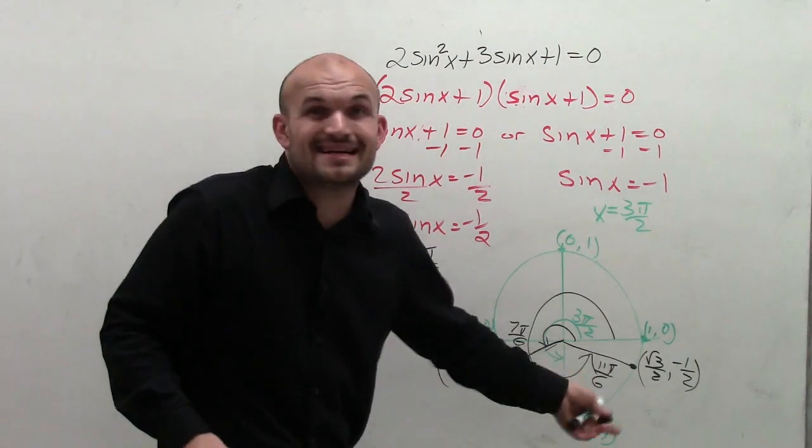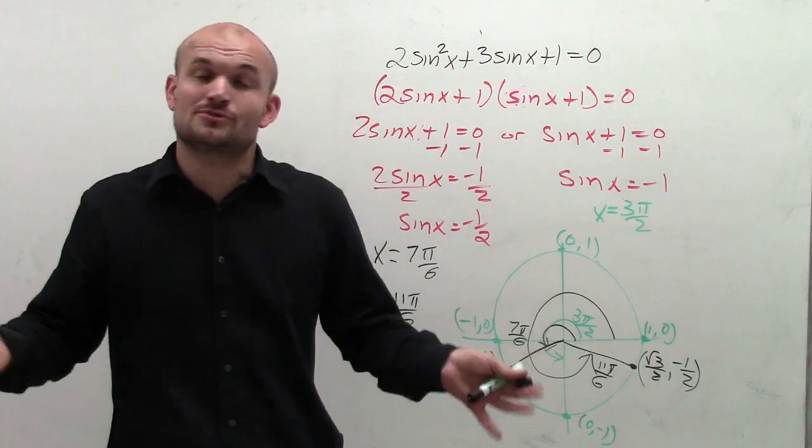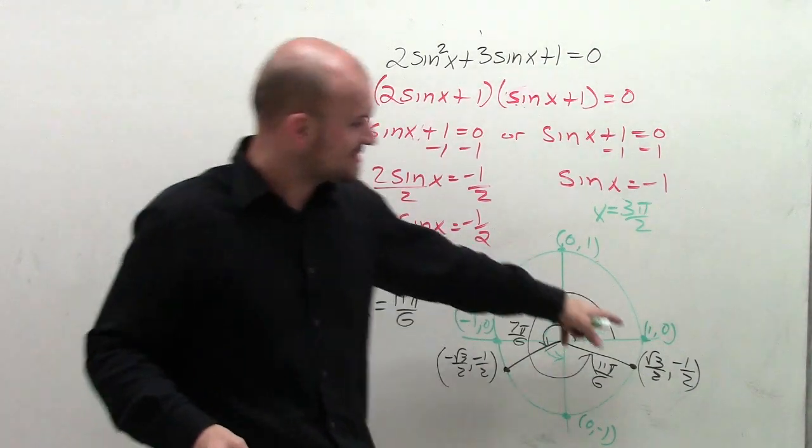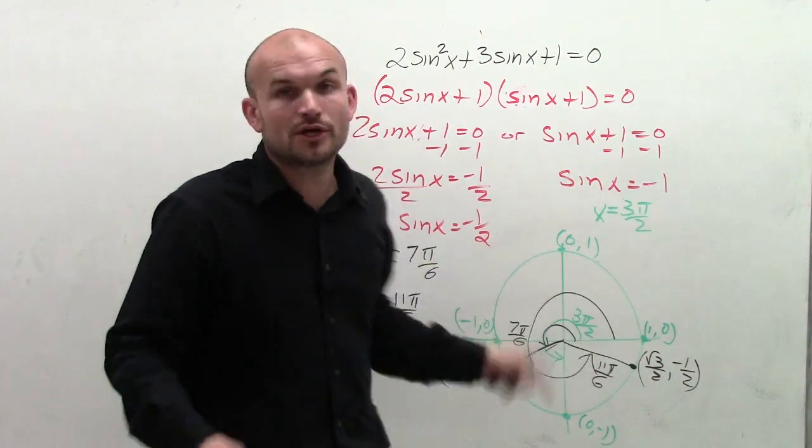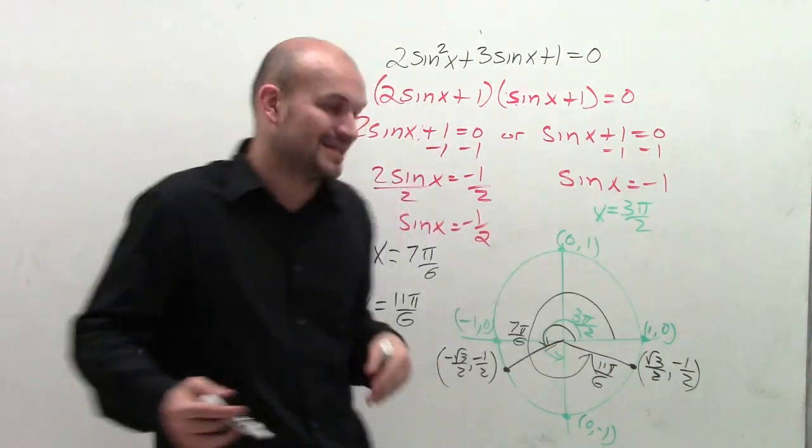But I don't want to just find the solutions on 0 to 2 pi. I want to find all the solutions. Because remember, the sine function is not just constricted to 0 to 2 pi. It keeps on going in the positive and the negative direction.